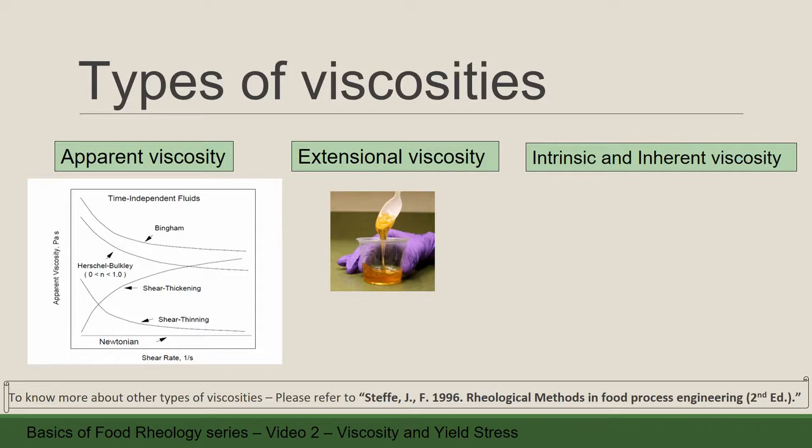For non-Newtonian fluid, for instance, shear thickening and shear thinning material: apparent viscosity increases for shear thickening material while it decreases in the case of shear thinning material. You will get more explanation about non-Newtonian fluids in video part 3.